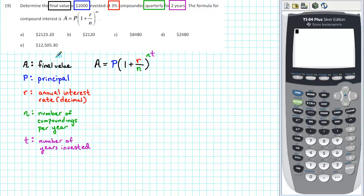The letter A represents the final value, which is what we are trying to determine. The value of P is the principal, which is the amount that we are starting with, which in this case is $2,000.